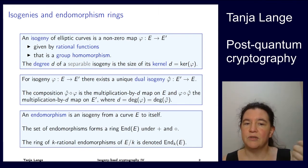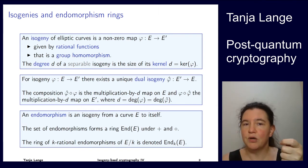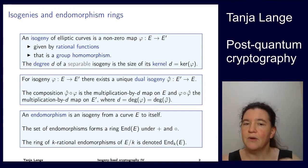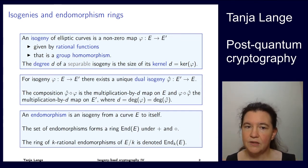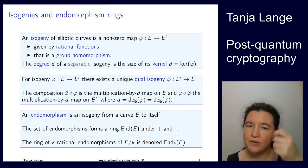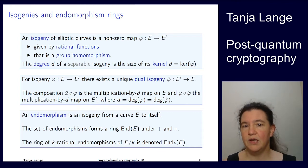Of course you can also do it the other way around: you start on E prime, go to E, and then go back from E to E prime. So then you have the multiplication-by-D map on the curve E prime as well.